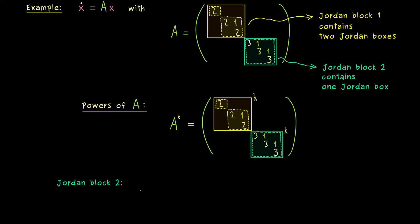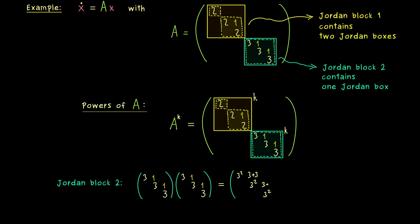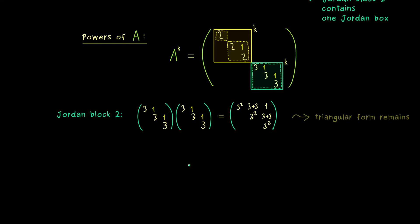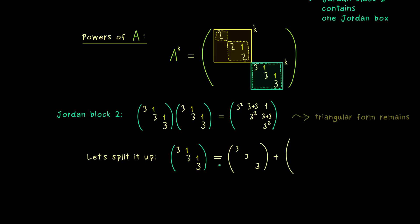Let's start with the simple one — Jordan Block 2. To get a feel for the powers, let's first consider the case k equals 2, meaning we just do a standard matrix-matrix multiplication. It's not hard to see that we have squares of 3 on the diagonal, and above the diagonal we have 3 plus 3, and in the corner we find 1. We still have our triangular structure, and by induction we can show this triangular form holds for all powers of the Jordan block. However, we should use the structure we have — specifically, we should separate our diagonal matrix from the rest. This rest only consists of 1s above the diagonal, which results in the fact that the powers of this matrix are easy to calculate.